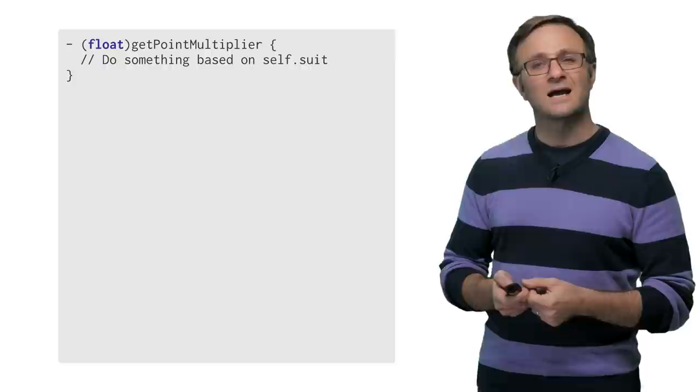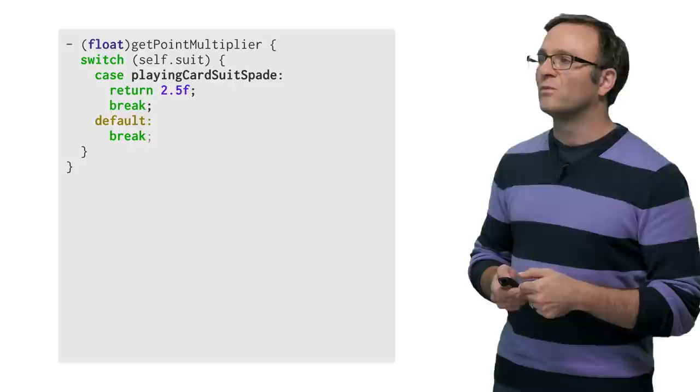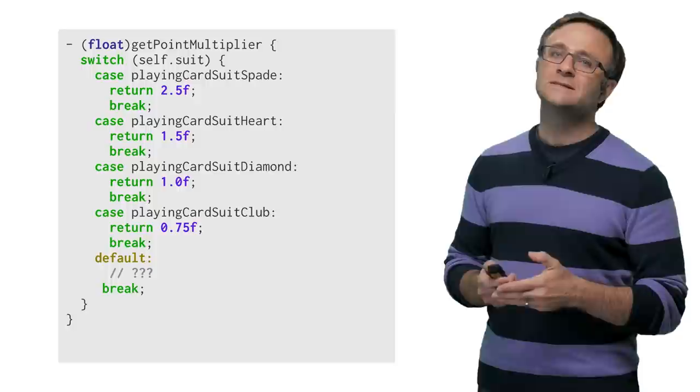And so we'll need to write a method to convert these suits into point multipliers. Well, this seems like a pretty obvious case for a switch statement. So we'll start to type it in here. We'll add in a case for spades, for hearts, diamonds, and clubs.